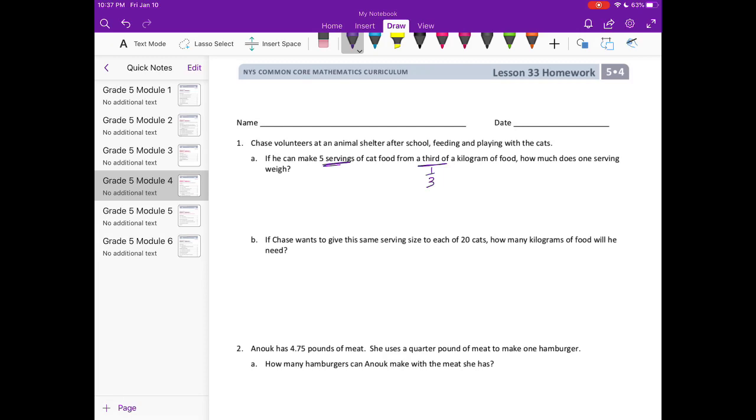How much does one serving weigh? If he has the one third and that makes five, we split that into five. One third divided by five is equal to one fifteenth of a kilogram. So each serving weighs one fifteenth of a kilogram.